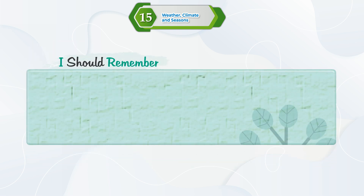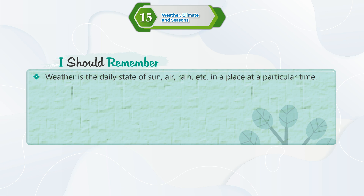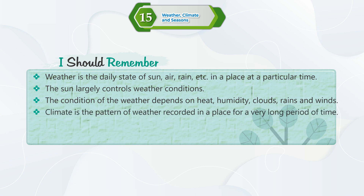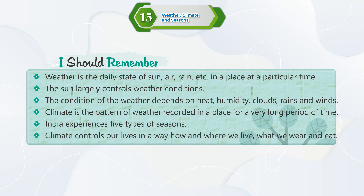I should remember: Weather is the daily state of sun, air, rain, etc. in a place at a particular time. The sun largely controls weather conditions. The condition of the weather depends on heat, humidity, clouds, rains, and winds. Climate is the pattern of weather recorded in a place for a very long period of time. India experiences five types of seasons. Climate controls our lives in terms of how and where we live, what we wear, and what we eat.